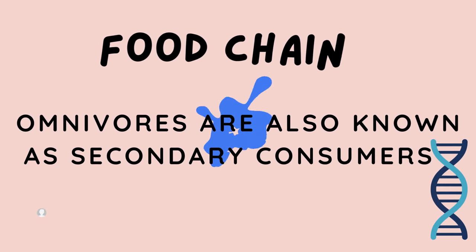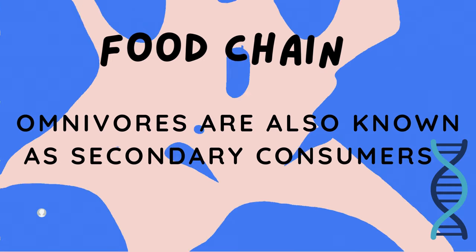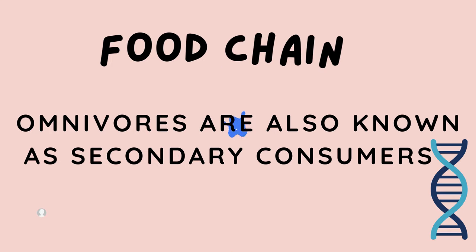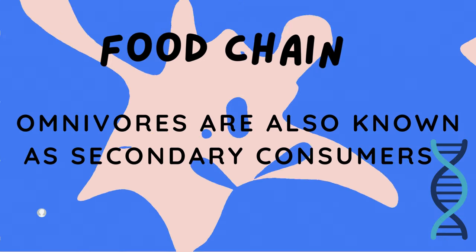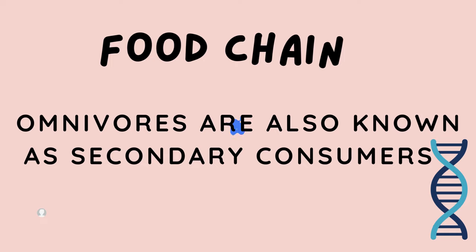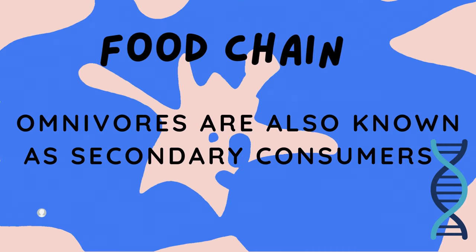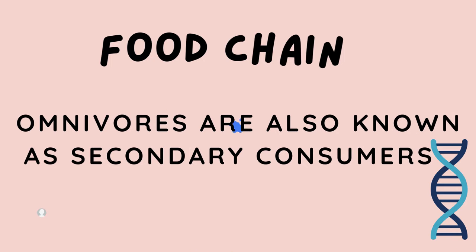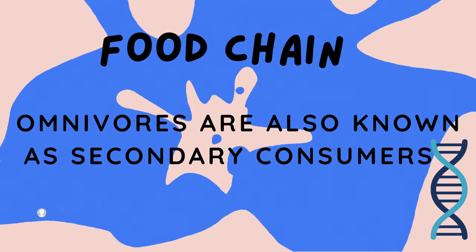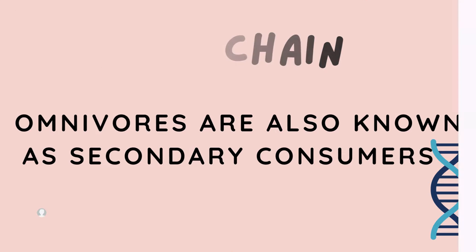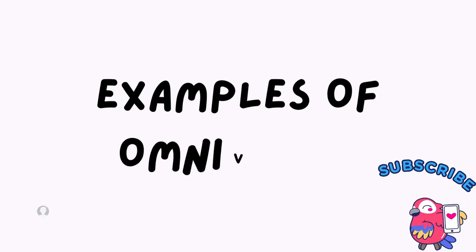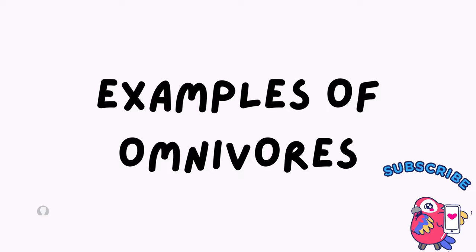Food chain. Omnivores. Where do omnivores fit in the food chain? Omnivores are also known as the secondary consumers. They eat other animals and vegetables to survive.